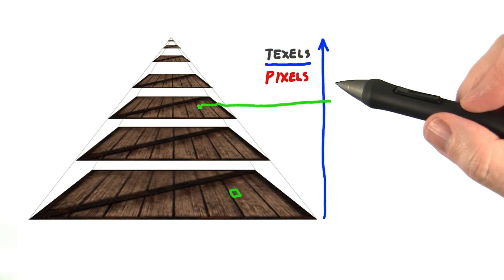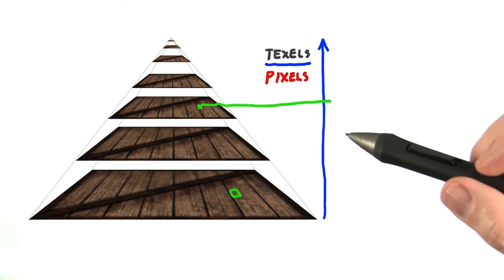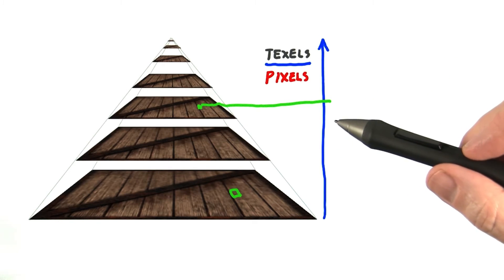The texture at this level of the pyramid is then sampled. Since the ratio of texels to pixels is about one to one for this lower resolution texture, the rendering looks much better without the noise we saw before.